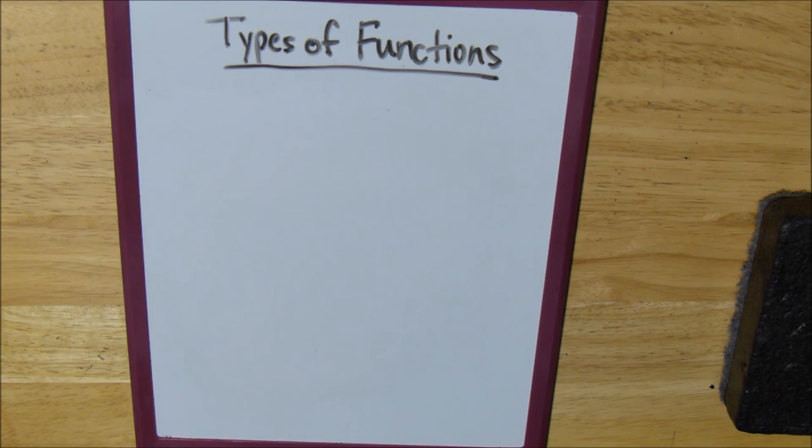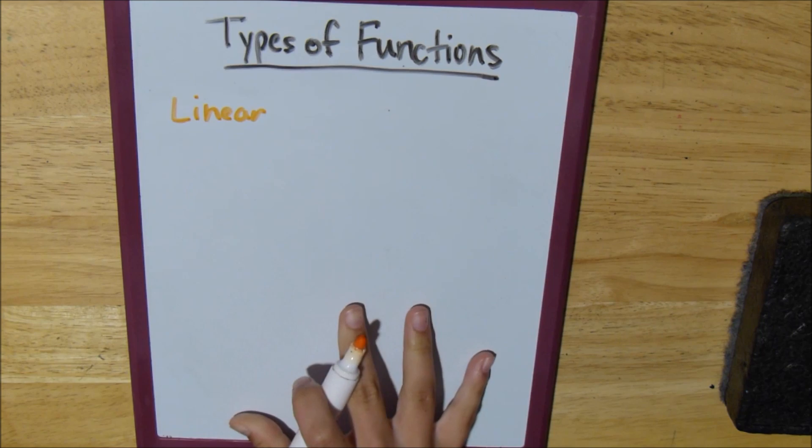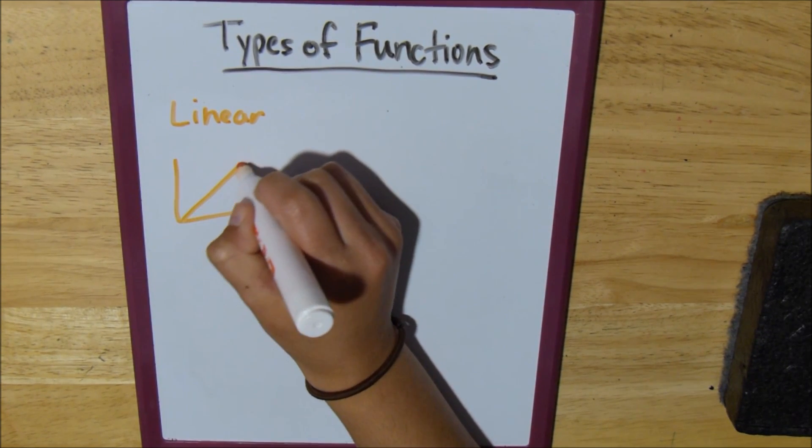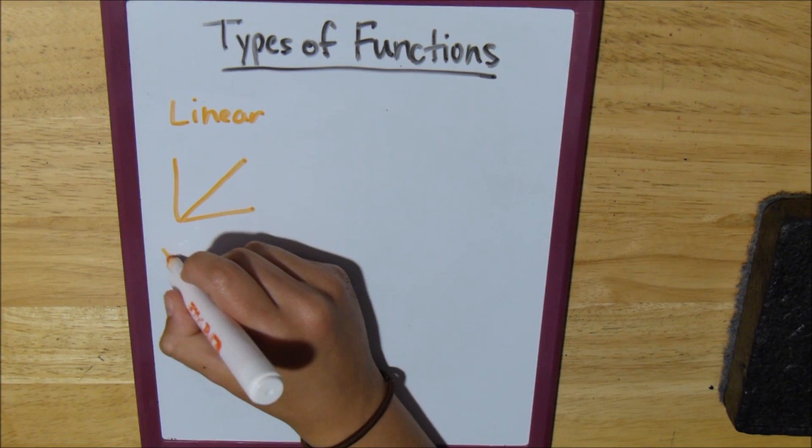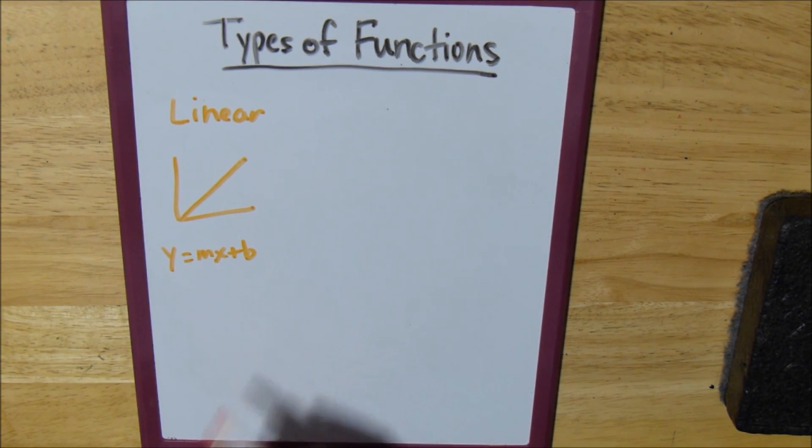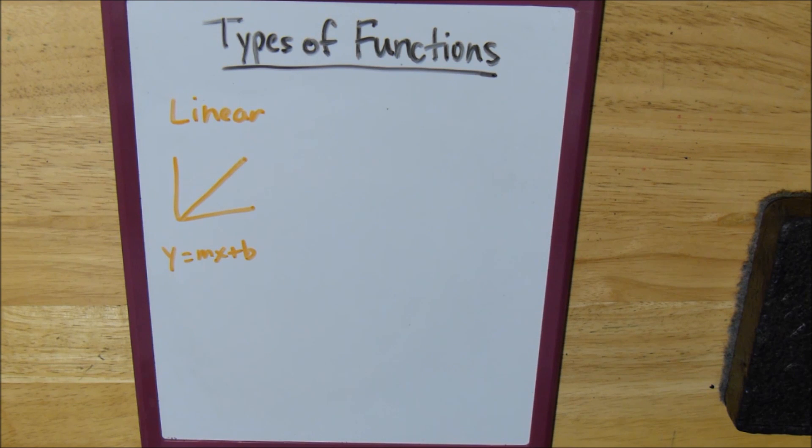So, on to our first basic function. That is a linear function. This can be identified by a straight line. It doesn't have to be positive, it doesn't have to be this exact slope, but you're basically just looking for a straight line. Our equation for this is y equals mx plus b, where m and b are just any numbers. b could be zero, just any numbers.